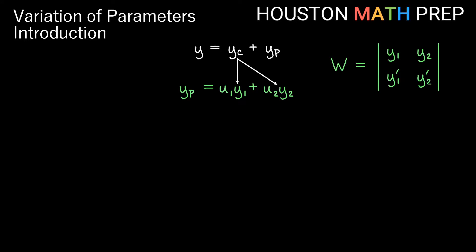In our previous video about Wronskians, we used them to check for linear independence of our fundamental set of solutions. Here we use them slightly differently in the context of variation of parameters. If we already know y1 and y2 from our complementary function y sub c, then we just need to find u1 and u2. We'll actually find their derivatives first, then integrate them to get u1 and u2.